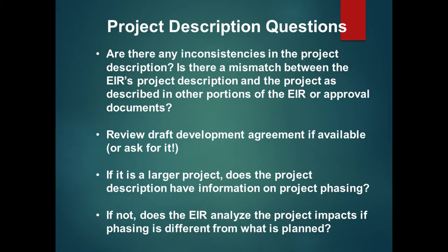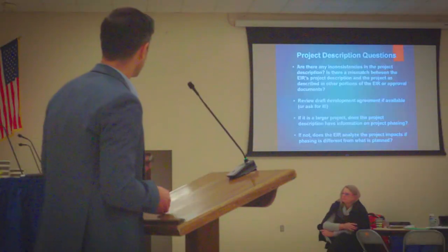These slides will be available to you. Here is a collection of questions I ask myself when commenting on a CEQA document, specifically on the project description section. Are there any inconsistencies between the project description? Is there a mismatch between the EIR's project description and the project as described in other portions of the EIR, or even in the development agreement? And in larger projects with different phases — where they're going to build X number of houses and then later build more — how is that described in the EIR? Does the EIR have contingency plans if one section of the project is built but future ones are not?